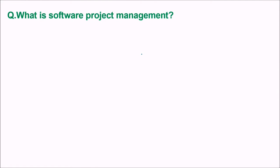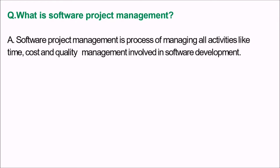What is software project management? SPM, or software project management, is the process of managing all activities — like time, cost, and quality — which are involved in the software development. Managing the software in terms of time, cost, and quality.